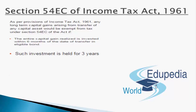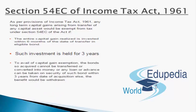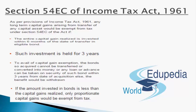As per the provisions of the Income Tax Act, any long-term capital gain arising from the transfer of any capital asset is exempt from tax under Section 54EC if the entire capital gain realized is invested within 6 months of the date of transfer in eligible bonds — RECL and NHAI. Such investment must be held for 3 years. The bonds cannot be transferred, converted into money, or used as security for any loan within those 3 years. If the amount invested is less than the capital gain realized, only proportionate capital gain is exempt — for example, if you have a gain of Rs. 60 lakhs but the maximum limit is Rs. 50 lakhs, only Rs. 50 lakhs is exempt and the remaining Rs. 10 lakhs is taxable.